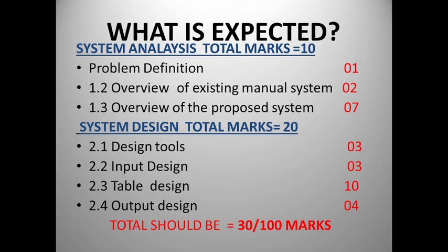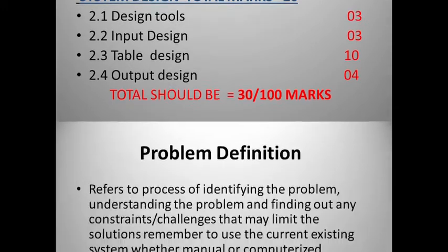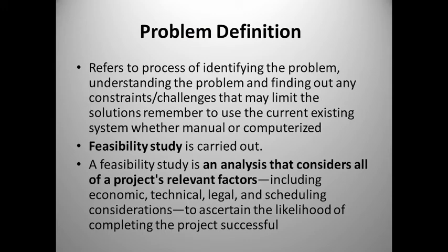The two parts are: System Analysis, which has 10 marks, and System Design, totaling 20 marks. In System Analysis, you will be expected to write about the problem definition — you can write one paragraph or even one line — then the overview of the existing manual system and the overview of the proposed system. In System Design, you will go through design tools, input design, table design, and output design individually.